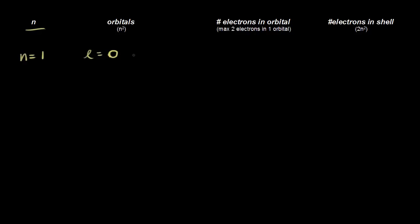We know l is equal to zero refers to an s orbital, so we're talking about an s orbital here. The next quantum number is the magnetic quantum number, ml. The magnetic quantum number depends on the angular momentum quantum number and goes from negative l to positive l. If l is equal to zero, we only get one value for the magnetic quantum number — zero — which tells us the orientation. So we have only one possible orientation; we have only one s orbital, shaped like a sphere.